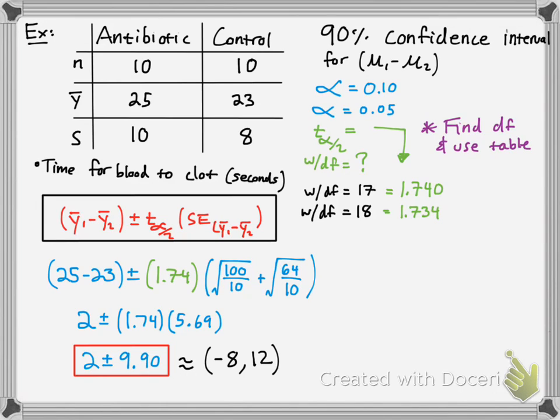So we can make this an interval notation just to make things a little simpler to see. So we have negative 8 to 12. What does this mean exactly? Well, let's go back to the data.